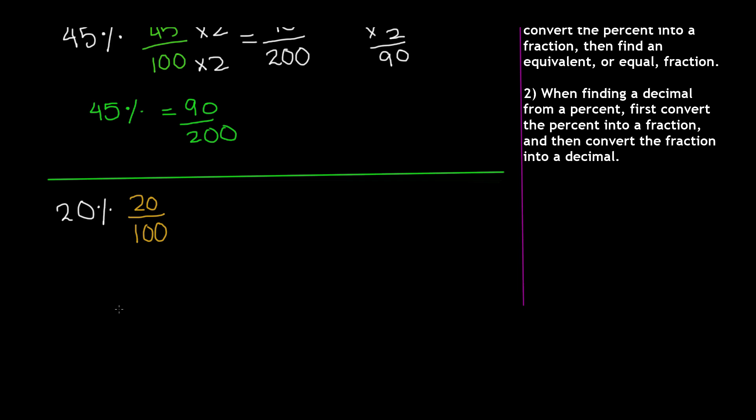Now, before we divide, we can eliminate zeros here because we really don't need them. After all, you're going to be dividing. So for every zero that you cut out in the numerator, you have to cut out the equal number of zeros in the denominator.